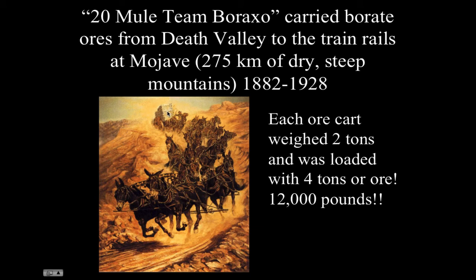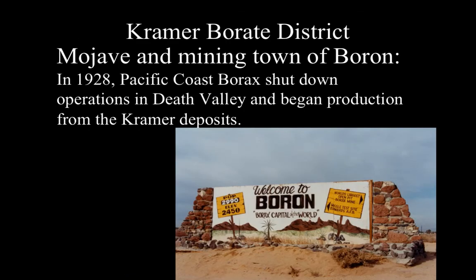They sometimes had problems with the brakes and temperatures in excess of 110 degrees Fahrenheit — very difficult work to move these ore carts. Each cart weighed about two tons and was loaded with four tons of ore, so about 12,000 pounds per ore cart — and remember there were two of them, plus the water cart. On the path between Death Valley and Mojave there were only two or three springs where you could actually get water. Very treacherous.